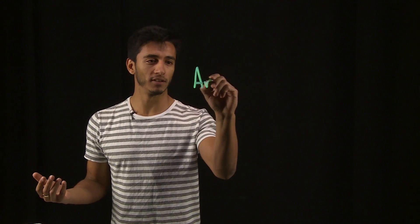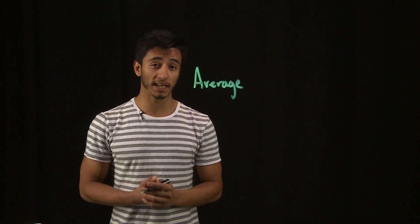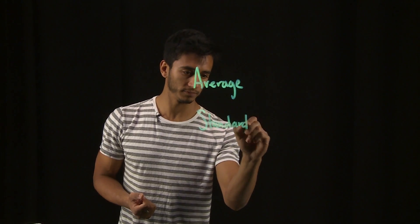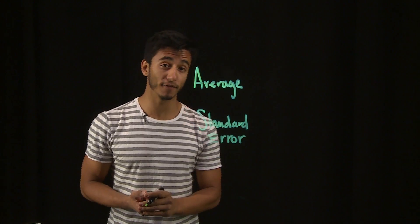And we're going to introduce three characteristics of data that we're going to be revisiting throughout the course and that are building blocks for not only econometrics, but also probability and statistics. And these are average, standard error, and variance.